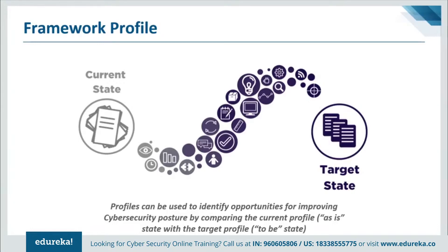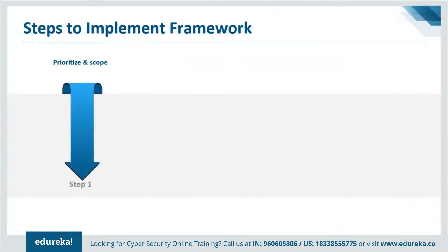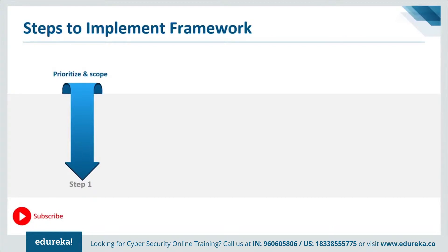The following steps illustrate how an organization could use the framework to create a new cybersecurity program or improve an existing one. These steps should be repeated as necessary to continually improve cybersecurity. The first step is to prioritize and scope: the organization identifies its business mission objectives and high-level organizational priorities, makes strategic decisions regarding cybersecurity implementations, and determines the scope of systems and assets that support the selected business line or process. Risk tolerances may be reflected in a target implementation tier.